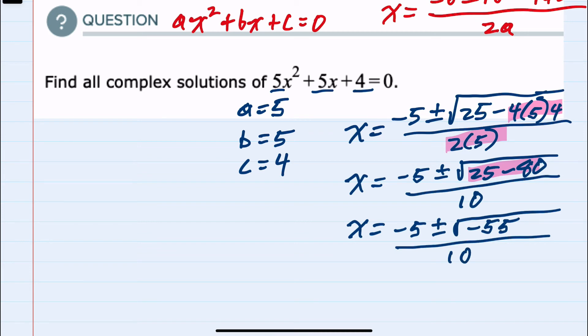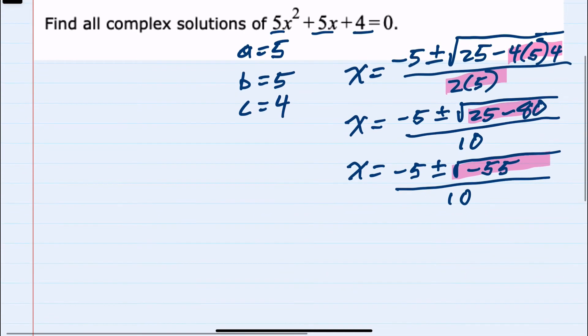And this is where we can see that we are going to have complex solutions, because since we have the square root of a negative, we know that we can simplify that using i and write this as negative 5 plus or minus i square roots of 55 over 10.